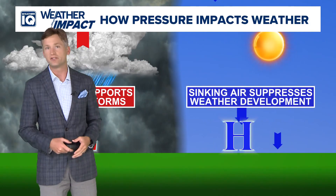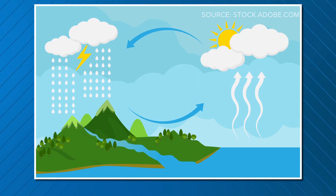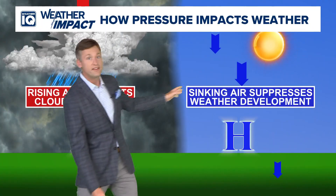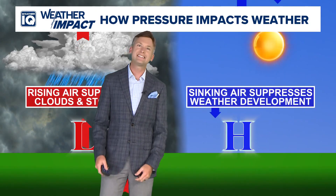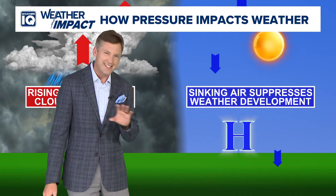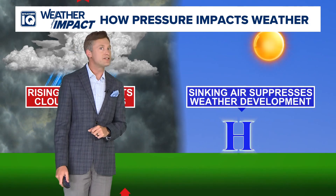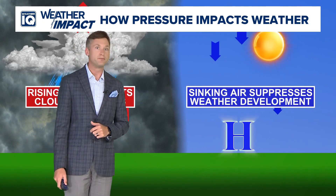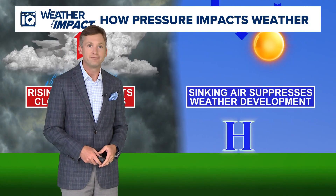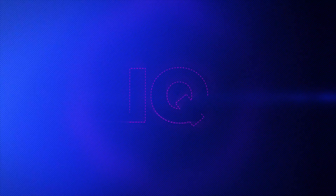For our weather, low pressure and rising air creates clouds and storms. Think about the water cycle — as air rises, it cools and condenses and eventually forms precipitation. On the flip side, with high pressure, that sinking air suppresses cloud cover and storm development. Now it's not always the case, but if we have stormy weather, there's a good bet on low pressure systems being close to us, while on beautiful sunny days, high pressure is at the wheel.